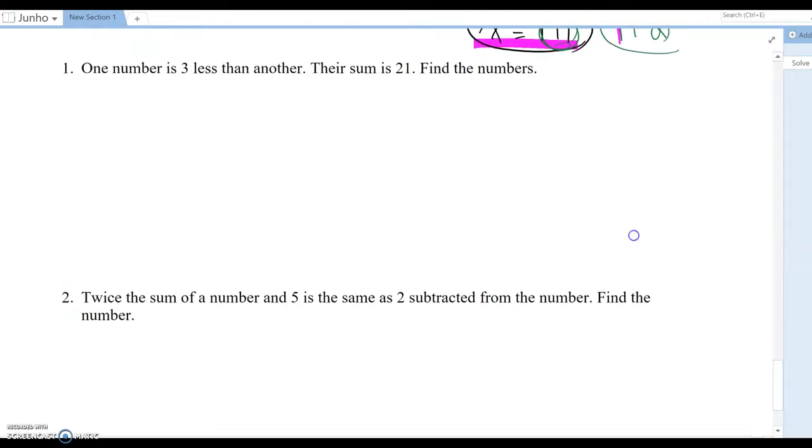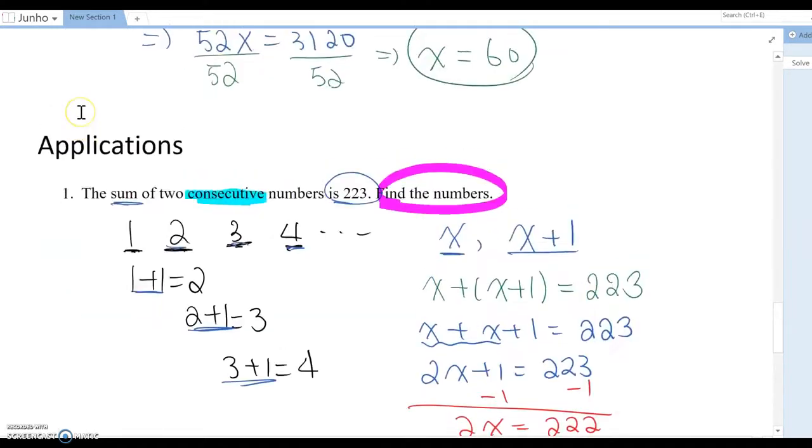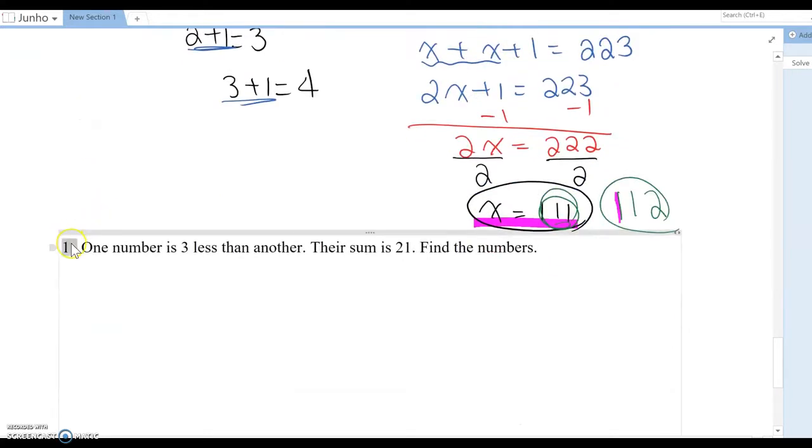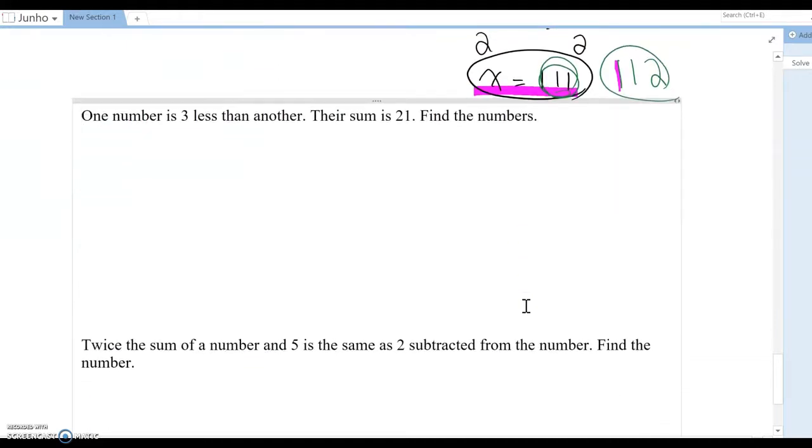Second question here. One number is three less than another. Their sum is 21. Find the numbers.